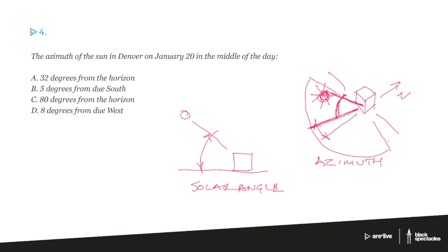So azimuth is the degree off of a cardinal direction. Cardinal direction means south, north, east, west. Almost always, at least in the northern hemisphere, when you say azimuth, you're talking about off of the south. But it can actually be off of any of them.